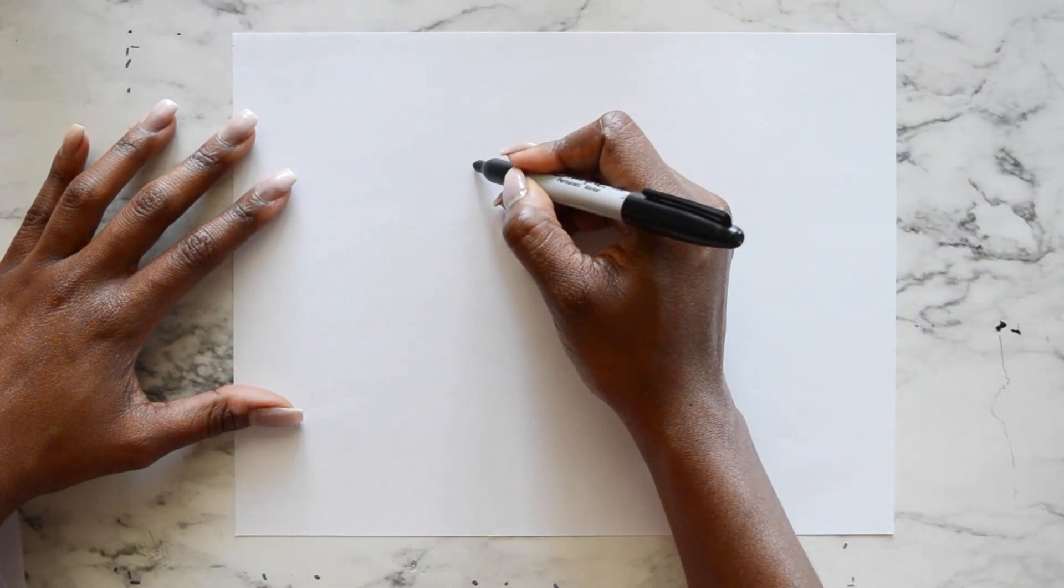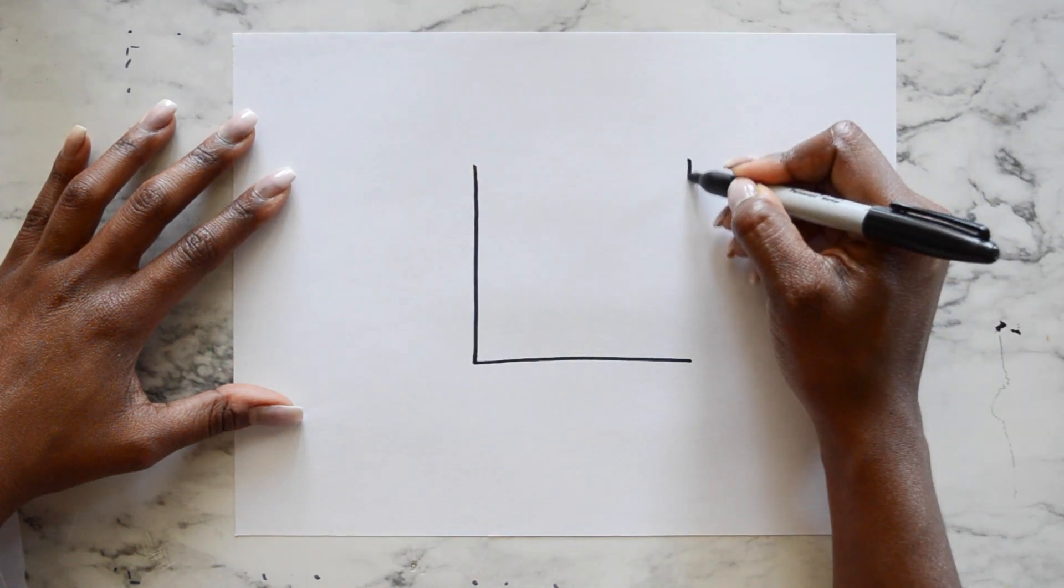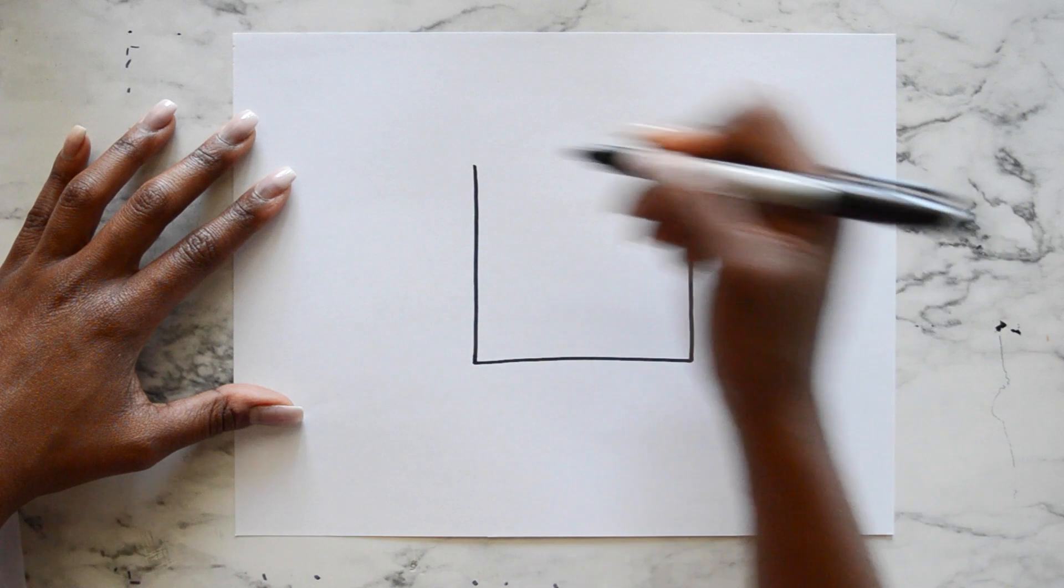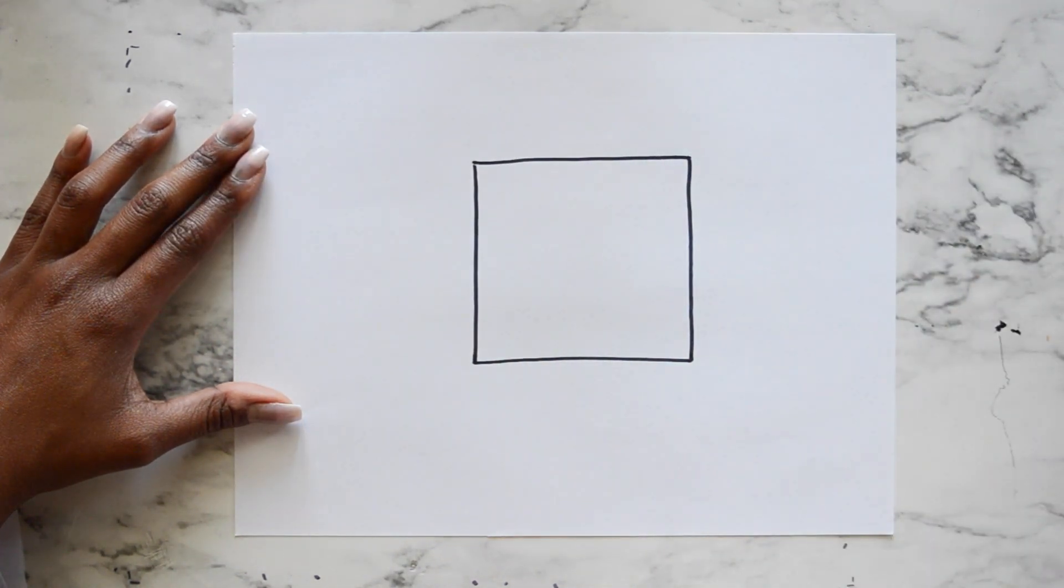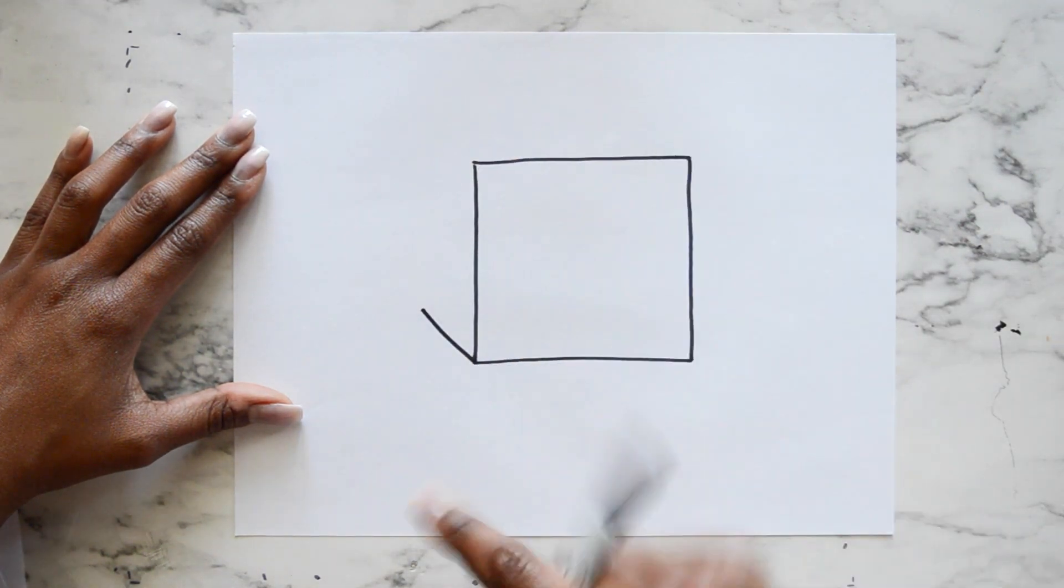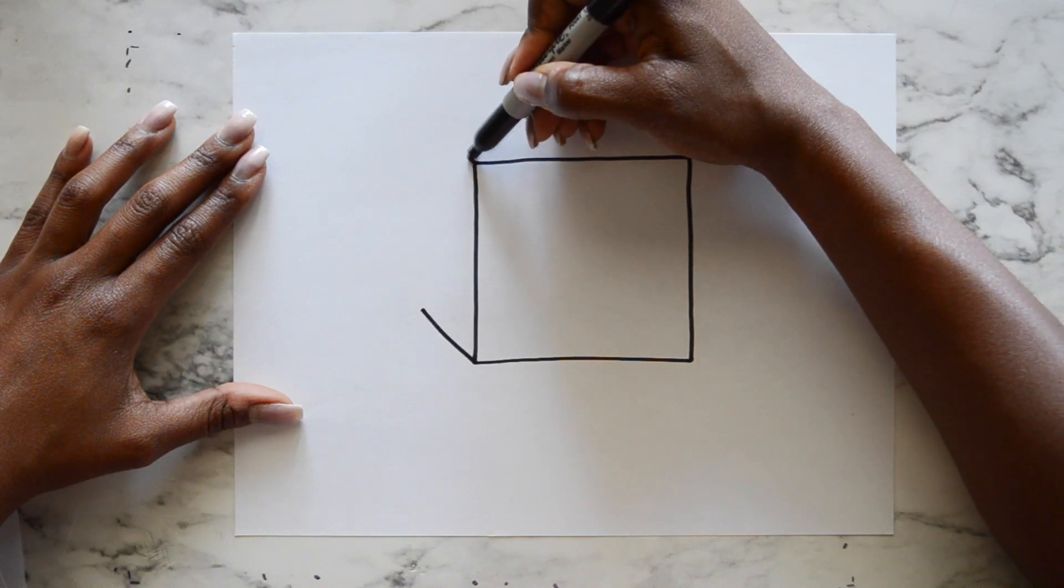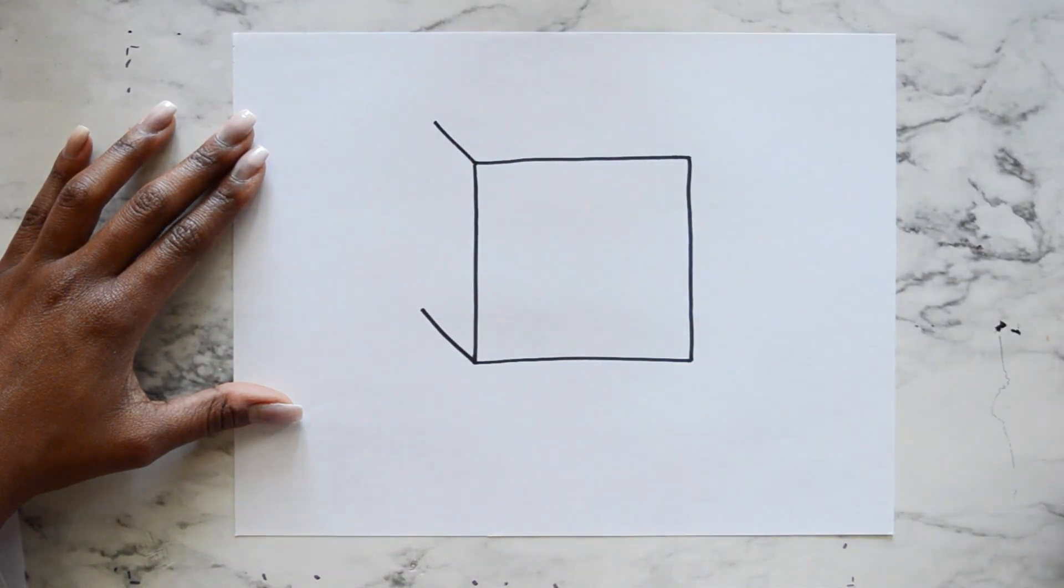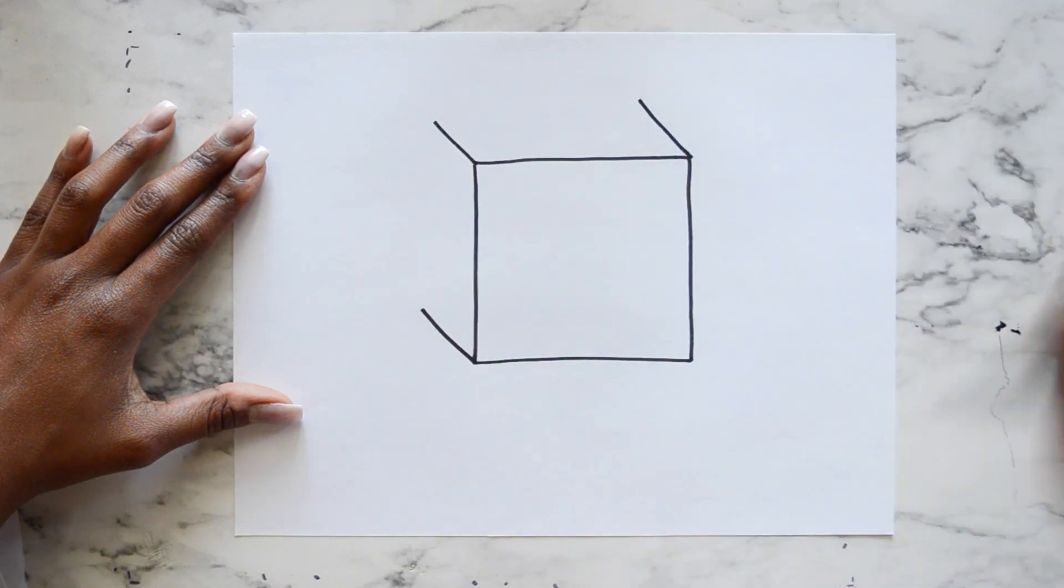Let's draw a cube. We're going to start with the 2D shape of a square. We want to make sure that the sides, or the edges, of our square are as close to the same length as possible. Then we're going to add a diagonal line going up from the bottom left corner. The top left corner, draw another diagonal line going up. And the top right corner, another diagonal line.